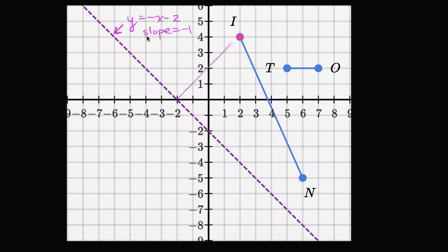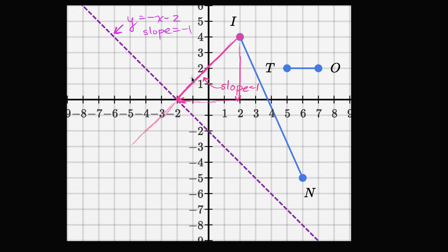If this purple line has a slope of negative one, a perpendicular line will have the negative reciprocal slope. The reciprocal of negative one is still negative one, but the negative of that is positive one. So the perpendicular slope needs to be one. To go from point I to the line, we decrease Y by four and decrease X by four. Then we do the same on the other side, going from negative two to negative six in X and down four in Y. We end up at the point negative six comma negative four.